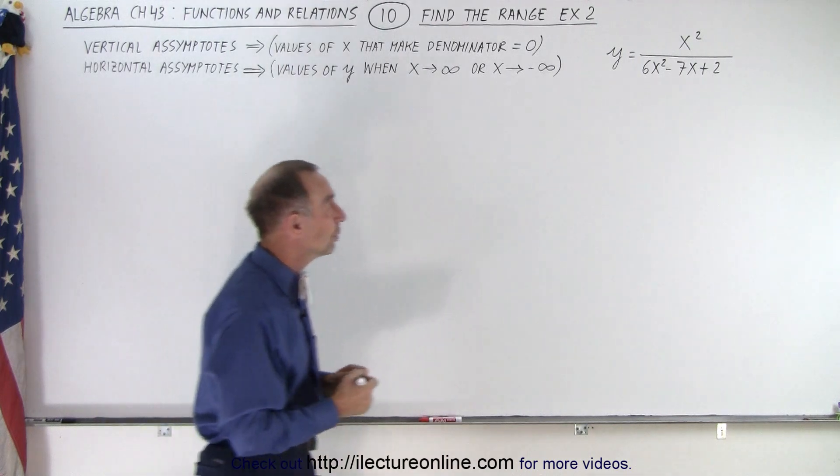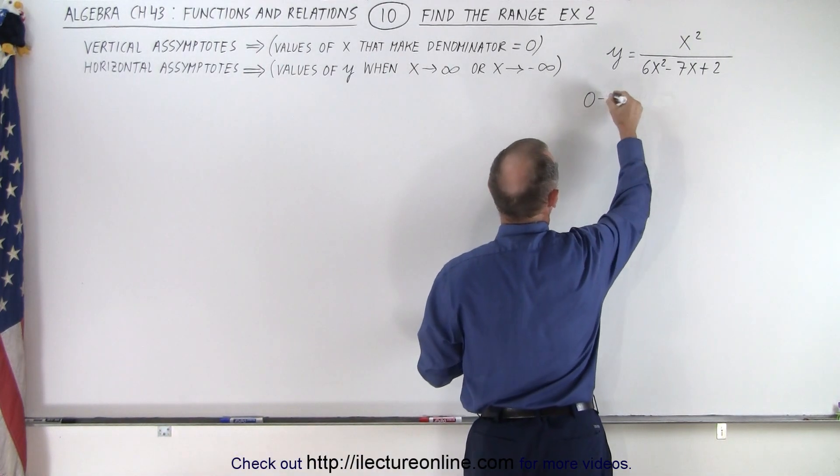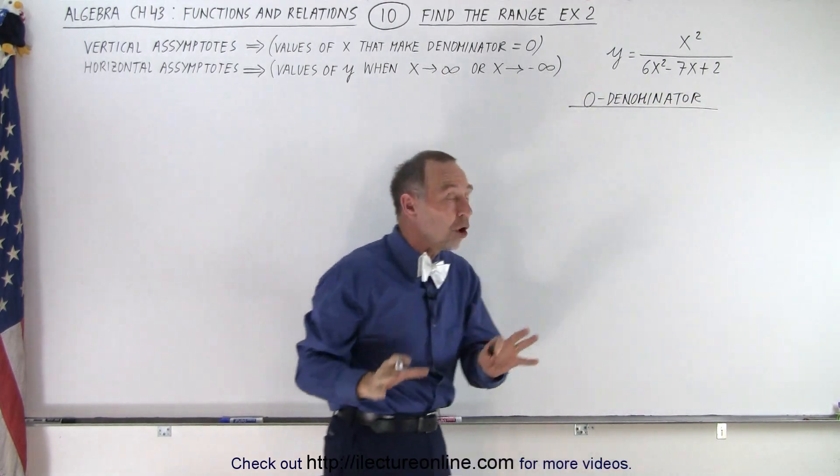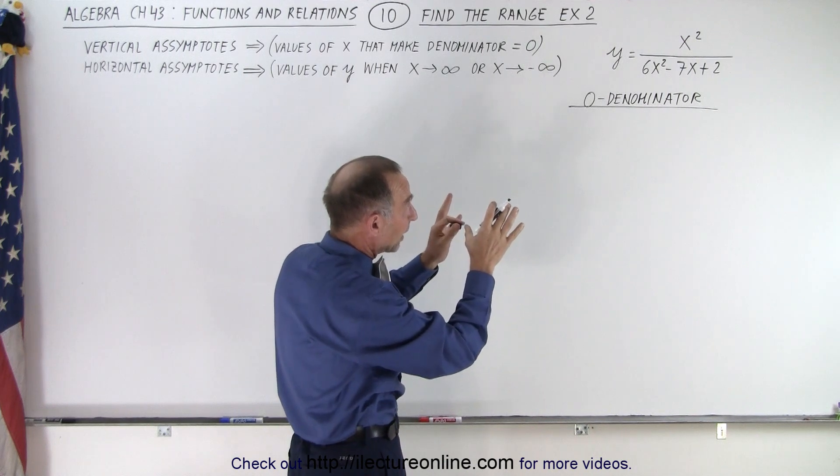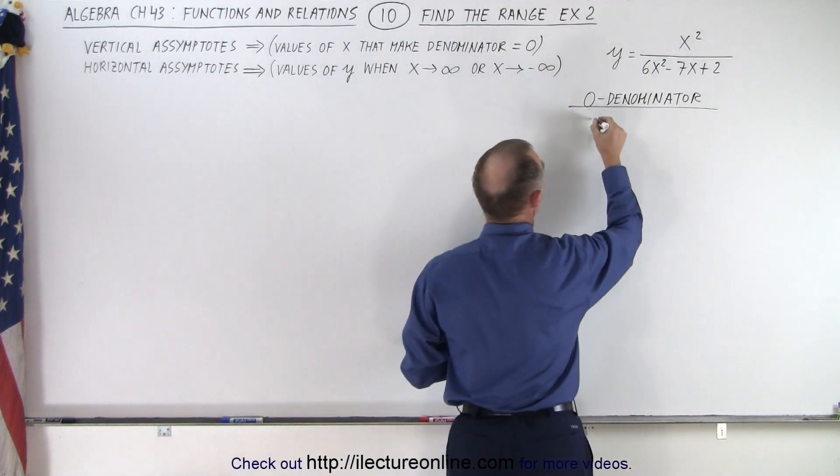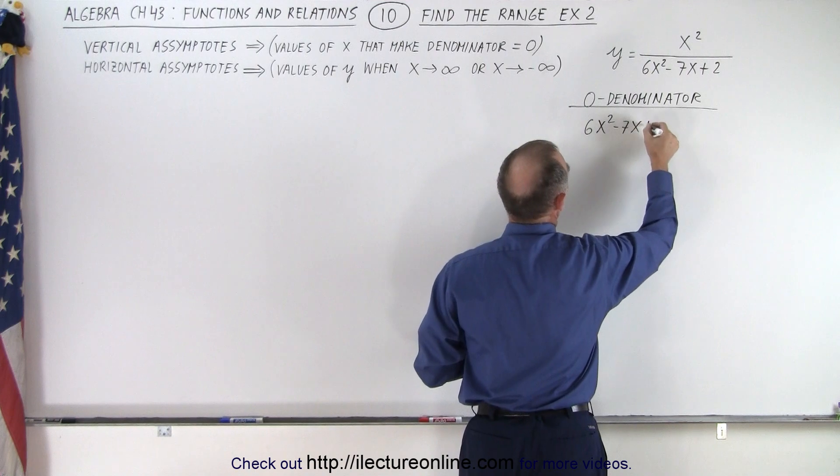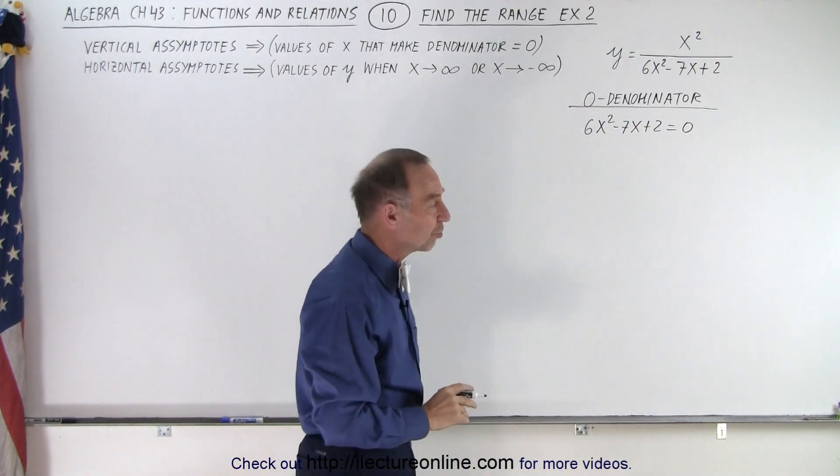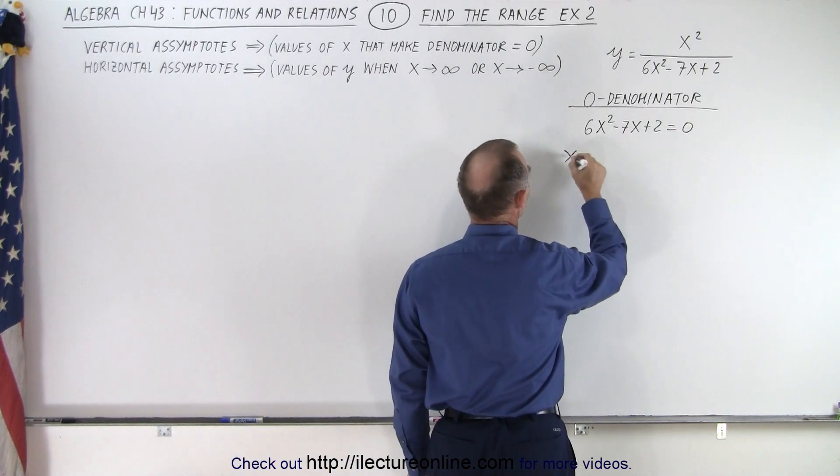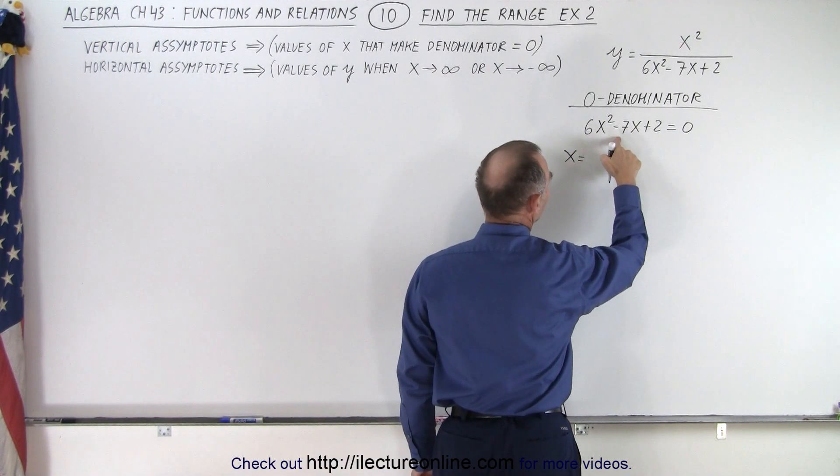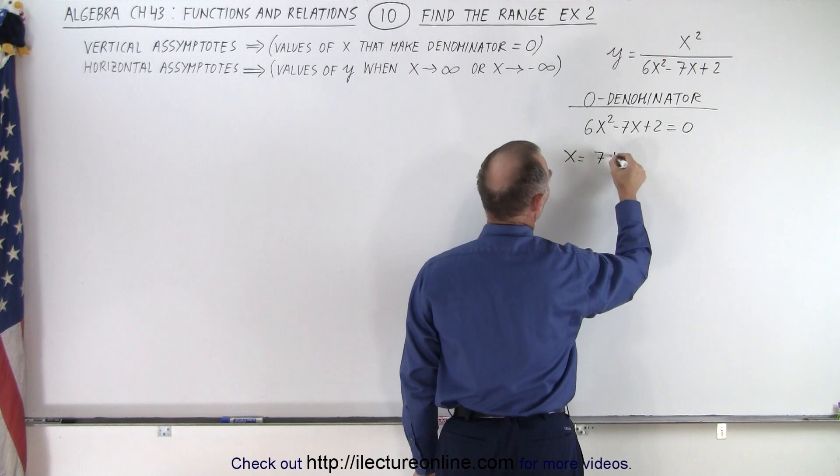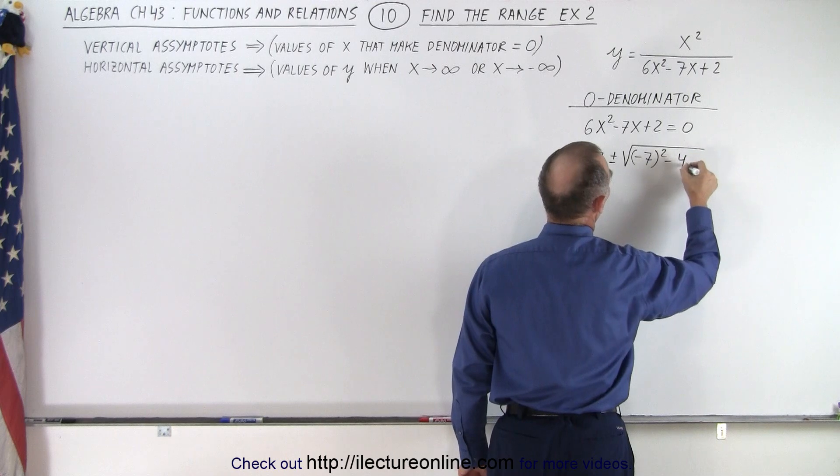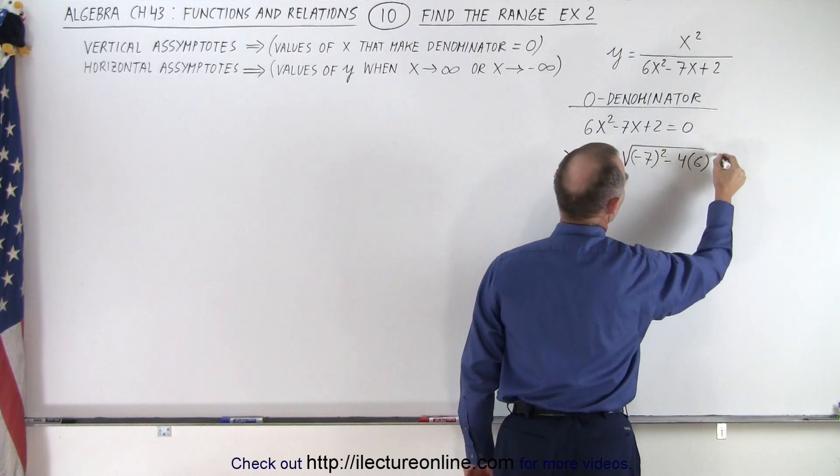First, what we're going to do is look for the zero denominator. To do that, we're going to solve for the denominator by setting it equal to zero. So we get 6x squared minus 7x plus 2 equal to zero. And we solve this quadratic equation. We use the quadratic formula. So we say x equals the negative of the middle term, which is seven, plus and minus the square root of b squared minus 4 times a times c.